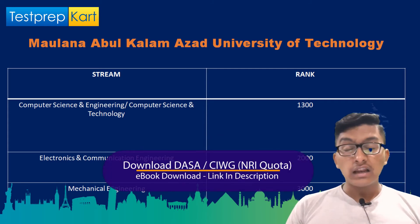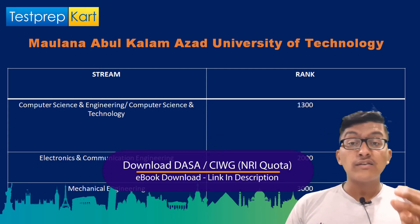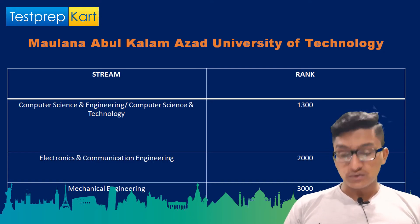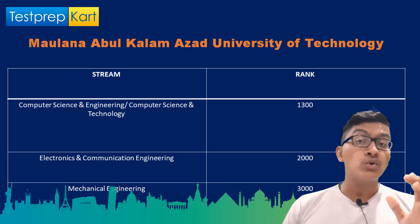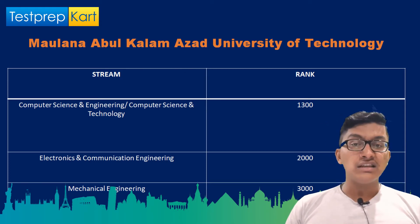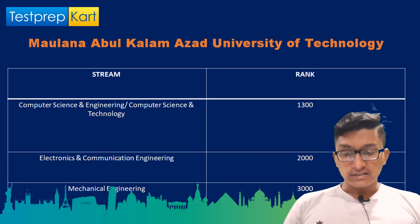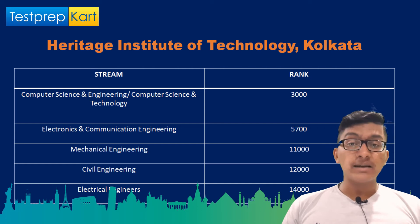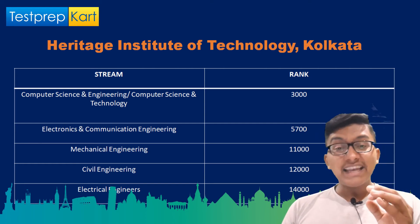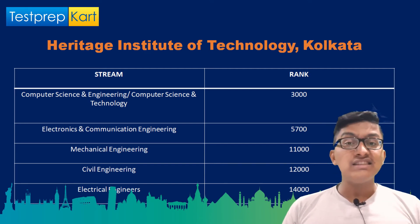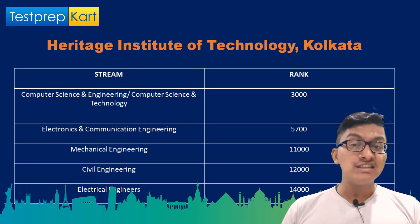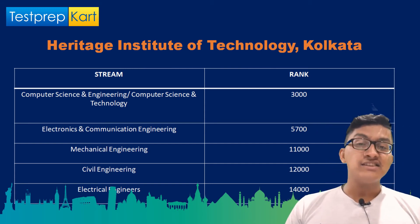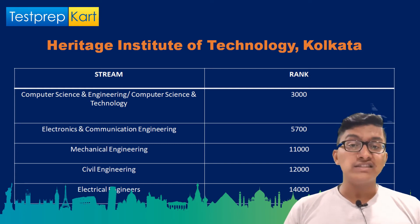For Maulana Abul Kalam Azad University in Kolkata: Computer Science Engineering requires a rank under 1300; Electronics and Communication under 2000; Mechanical Engineering under 3000; and Electrical Engineering under 2400. For Heritage Institute of Technology: Computer Science Engineering requires a rank under 3400; Electronics and Communication under 5700; Mechanical Engineering under 11000; Electrical Engineering under 7300; and Civil Engineering under 14000.